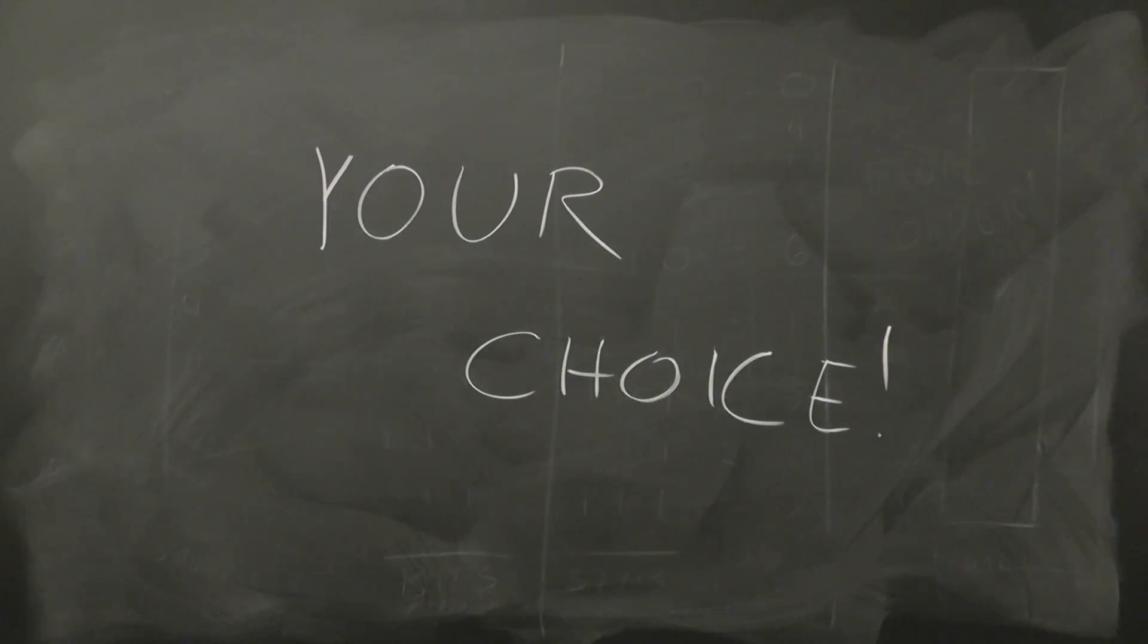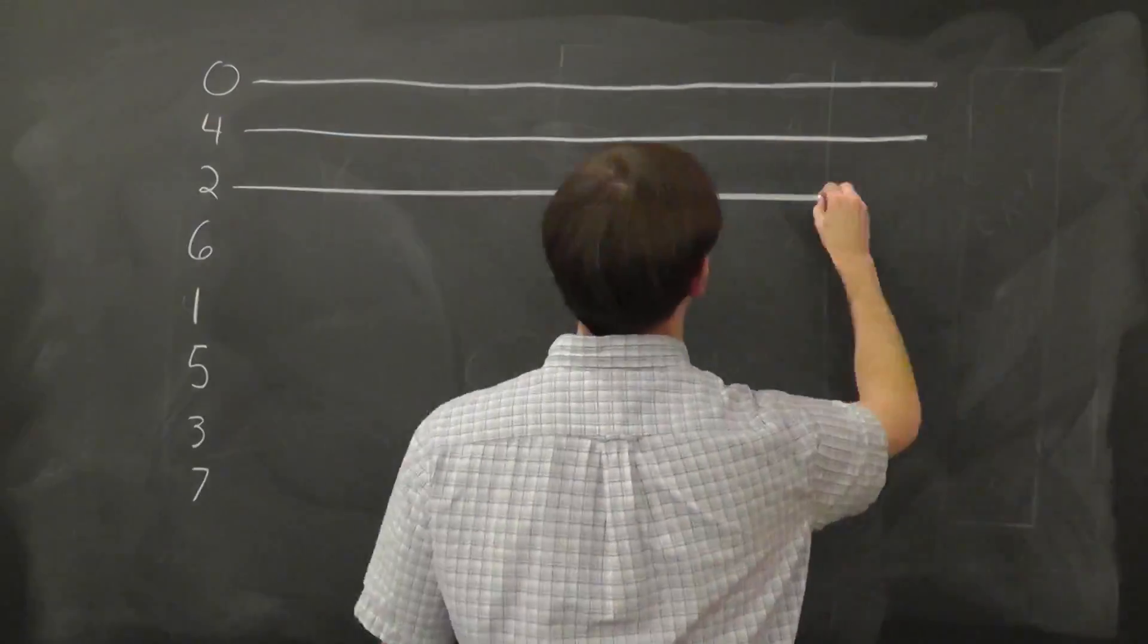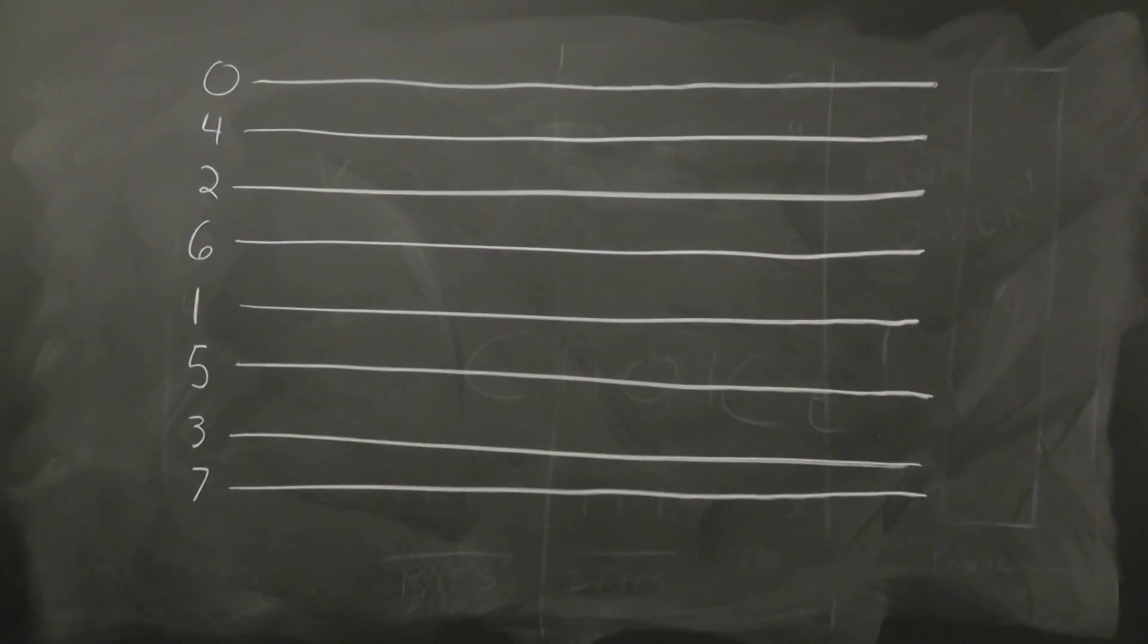Regardless, next is the tricky part: combining all of these elements back together. To visualize this step, most people use a butterfly diagram, which basically shows the flow of data with time.